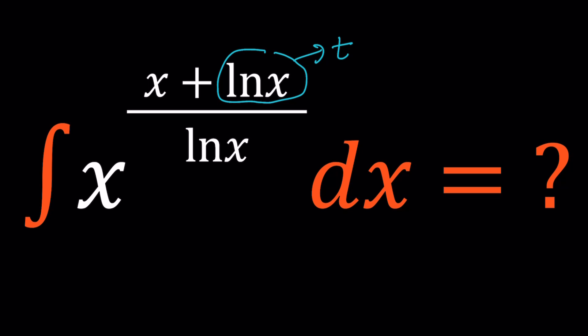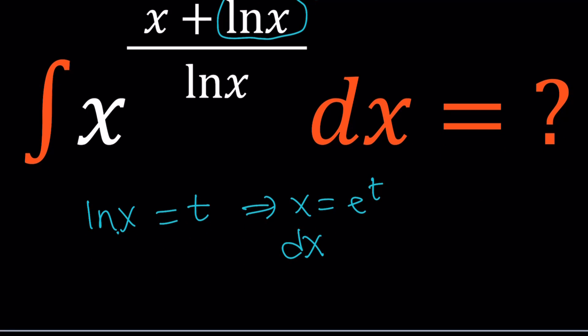And that gives us the following. If ln(x) is equal to t, then from here by using base e, x becomes e to the power t. And dx, which you need to evaluate, becomes e to the t dt. So I kind of need to go from the x world to the t world. So those two things are what I need, plus this one, right?